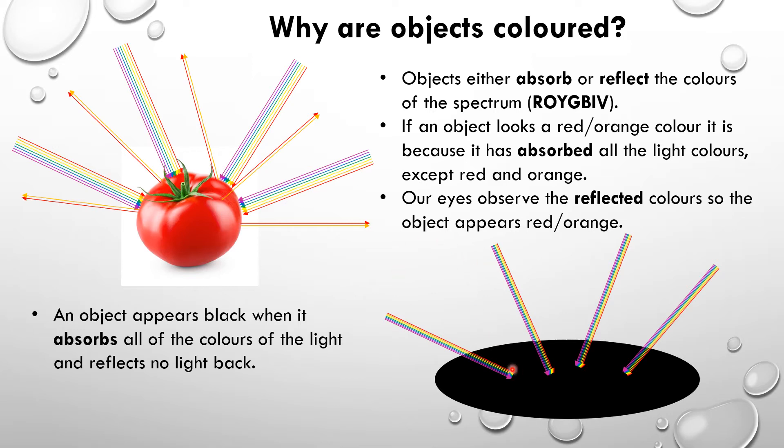our eyes will detect no light coming off this black object. And if you can detect no light, then what you see is black, so black colour is the absence of light.